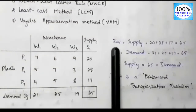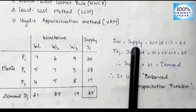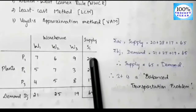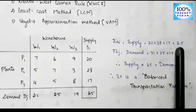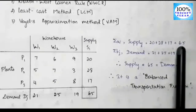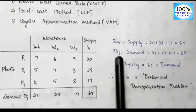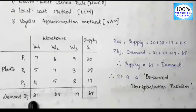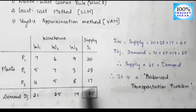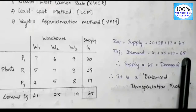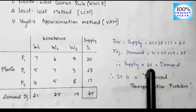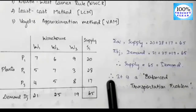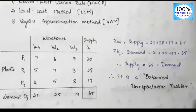In this example, demand and supply are equal. The summation of supply: 20 plus 28 plus 17 equals 65. The summation of demand: 21 plus 25 plus 19 equals 65. So demand and supply are both equal to 65. Therefore, it is a balanced transportation problem.